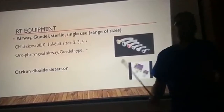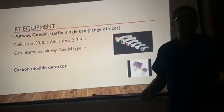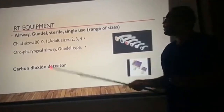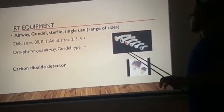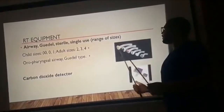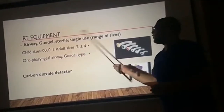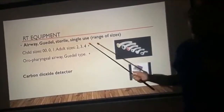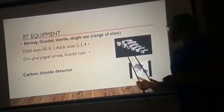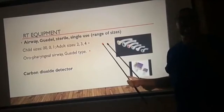Now we will start talking about the RT side of COVID-19. What does the RT need to prepare in terms of equipment, and what are the procedures the RT should do for COVID-19 patients? For RT equipment, we should always have the oropharyngeal airway from child sizes up to adult sizes. We should prepare all this equipment depending on the case — whether it's a child or an adult — because the patient may need airway management.